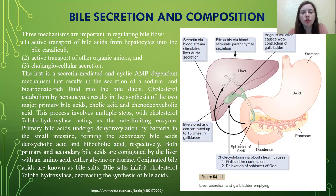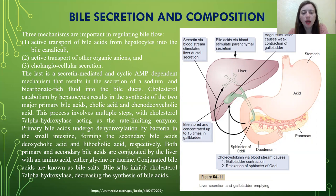Cholesterol catabolism by hepatocytes results in the synthesis of the two primary bile acids: cholic acid and chenodeoxycholic acid. This process involves multiple steps with cholesterol 7-alpha-hydroxylase acting as the rate-limiting enzyme. Primary bile acids undergo dehydroxylation by bacteria in the small intestine, forming the secondary bile acids deoxycholic acid and lithocholic acid respectively. Both primary and secondary bile acids are conjugated by the liver with an amino acid — either glycine or taurine — and these conjugated bile acids are known as bile salts. Bile salts inhibit cholesterol 7-alpha-hydroxylase, decreasing the synthesis of bile acids.